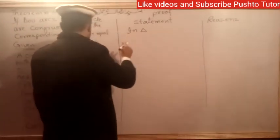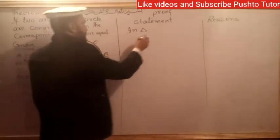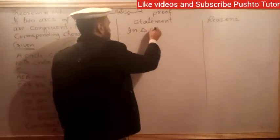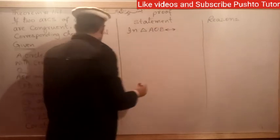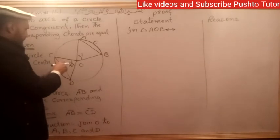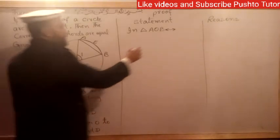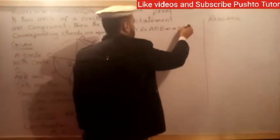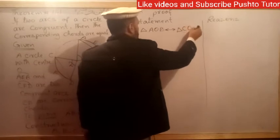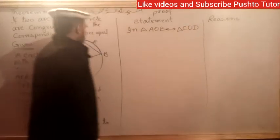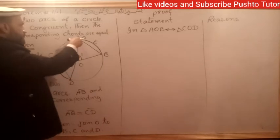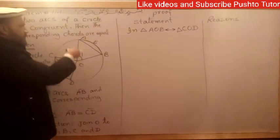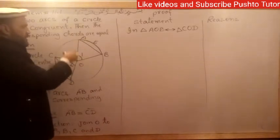Triangle AOB and triangle COD. The correspondence is: A corresponds to C, O corresponds to O, B corresponds to D. So the correspondence is triangle AOB to triangle COD.